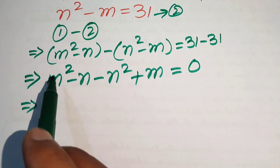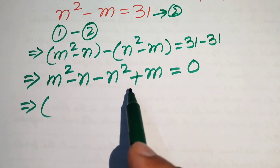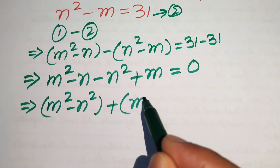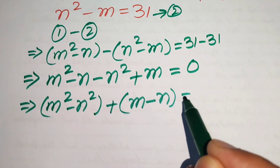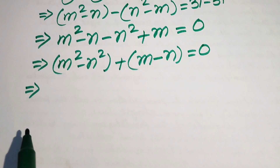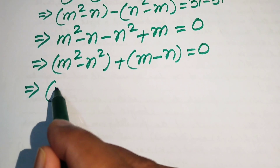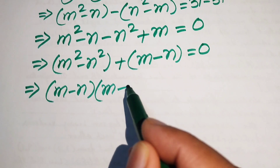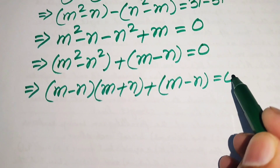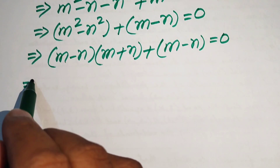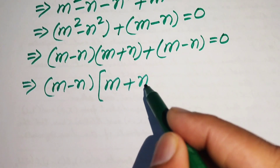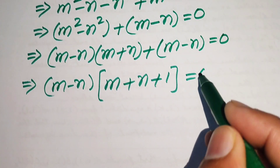We group the squared terms and the linear terms, writing it as m squared minus n squared plus m minus n equals zero. Then we apply the difference of squares identity: m squared minus n squared equals m minus n times m plus n. So we have m minus n times m plus n, plus m minus n, equals zero.